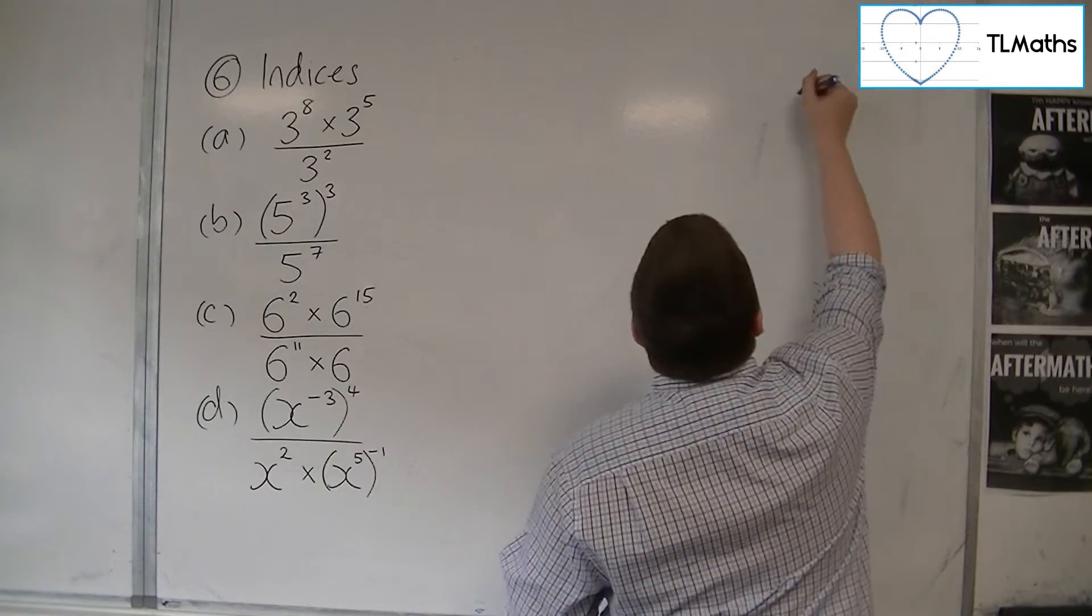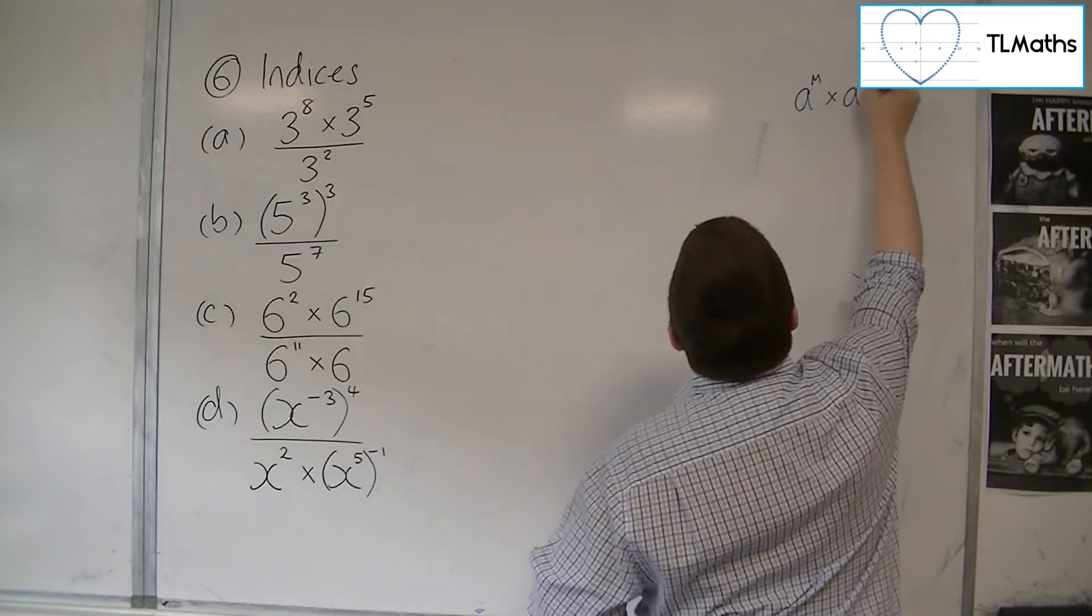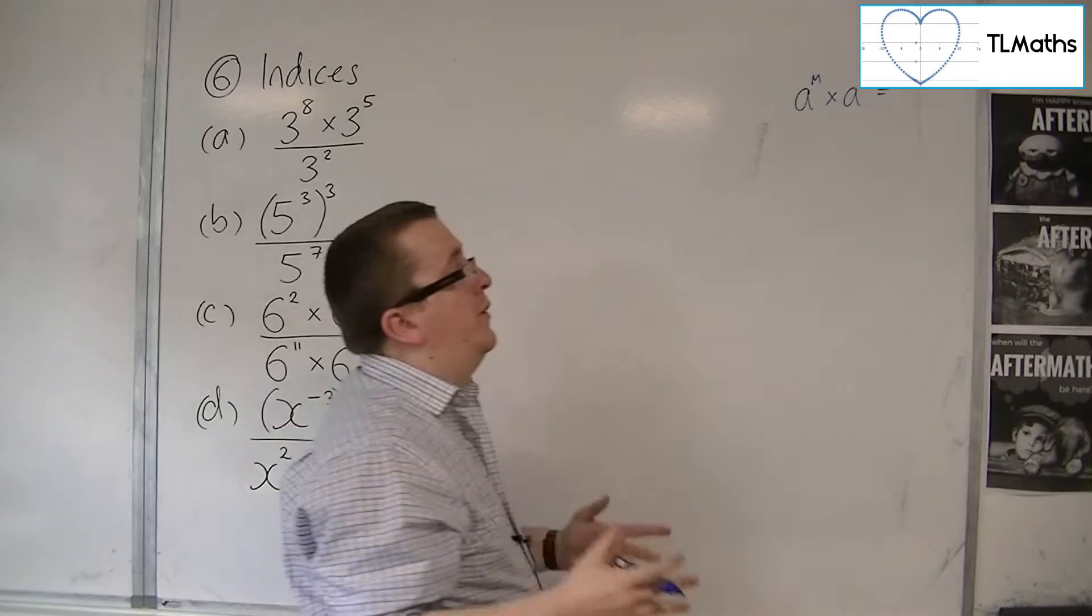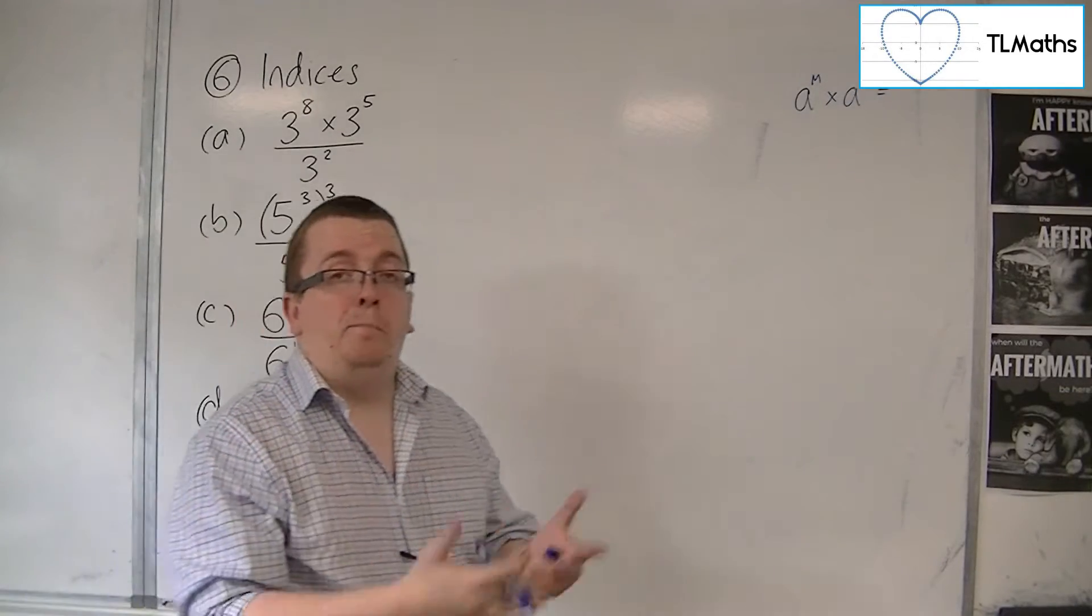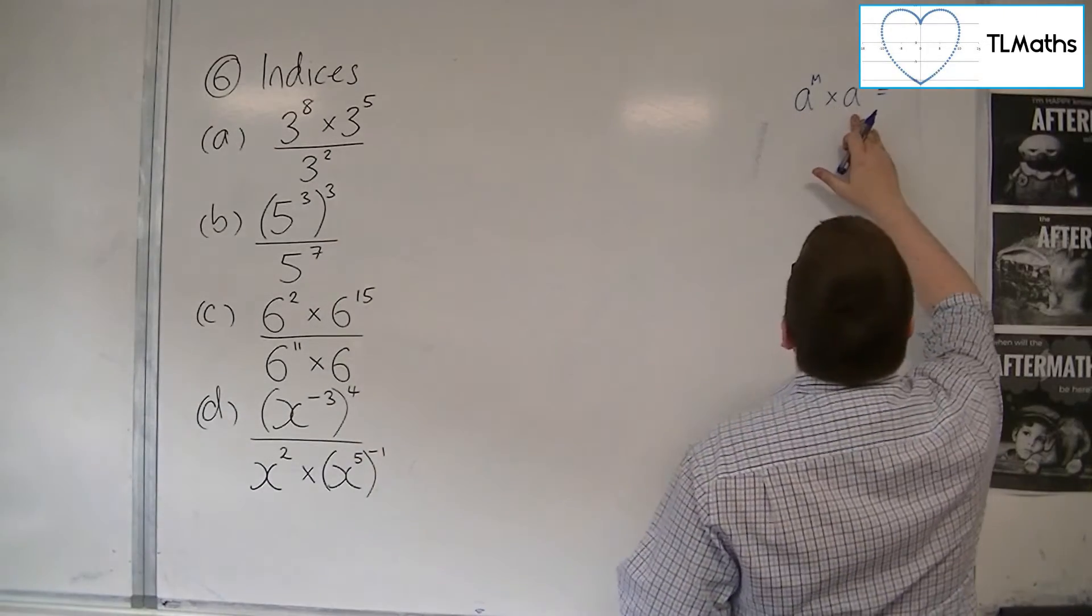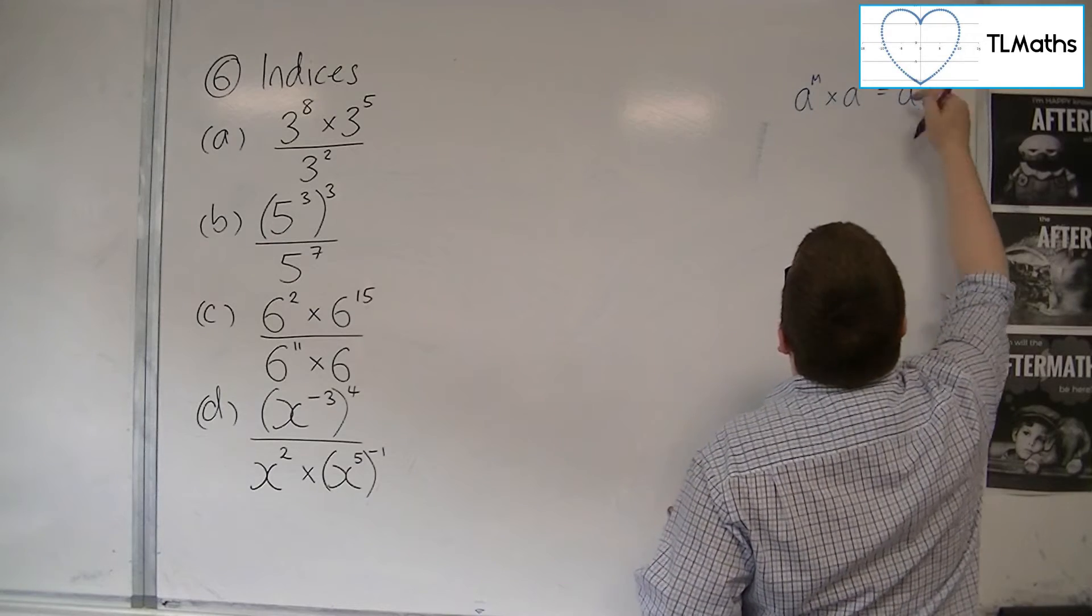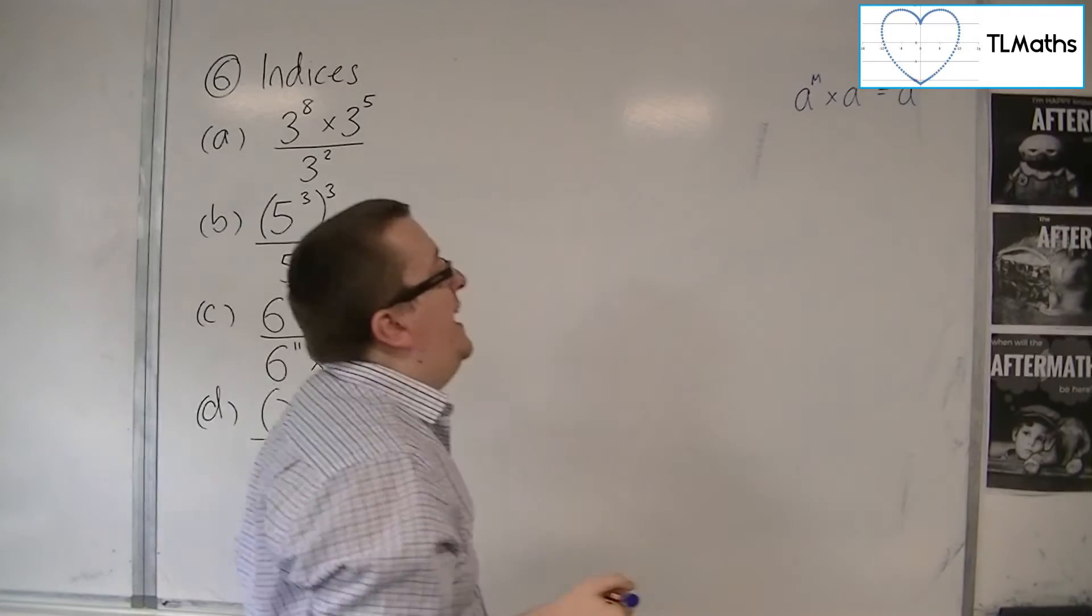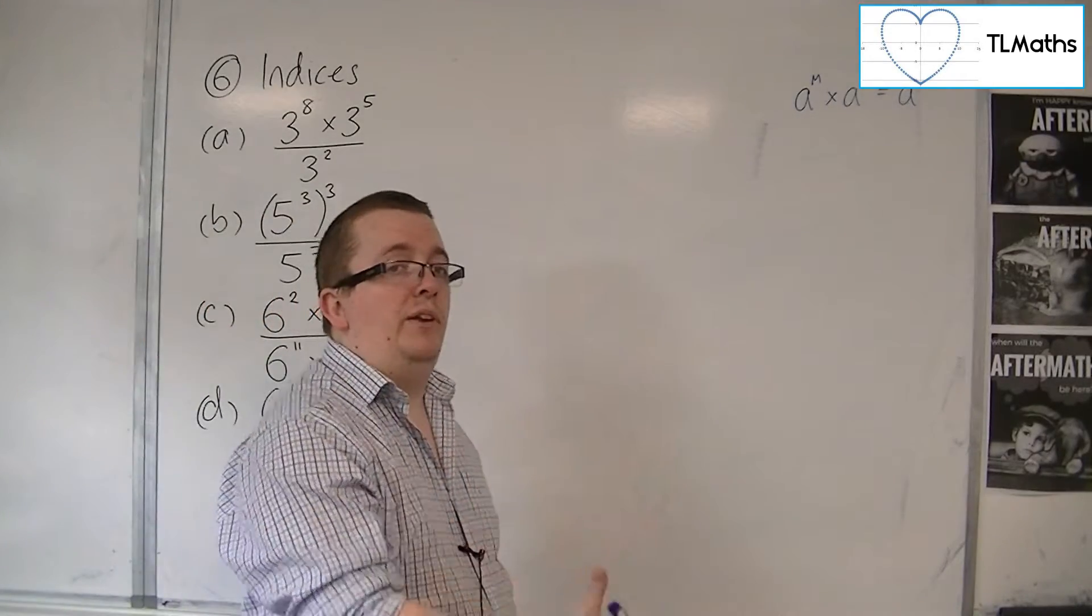The first rule: if you have a^m multiplied by a^n, where these A numbers are exactly the same - we refer to them as the base numbers - when we have the same base, the indices get added together. So a^m times a^n equals a^(m+n).